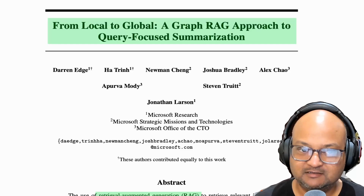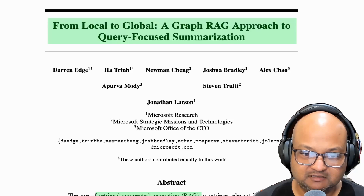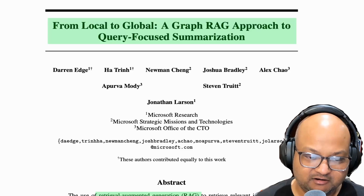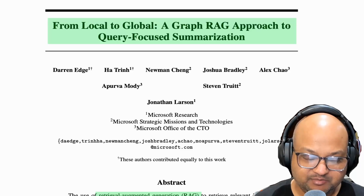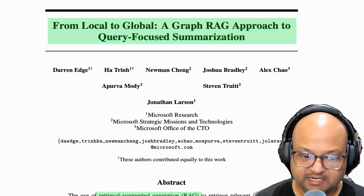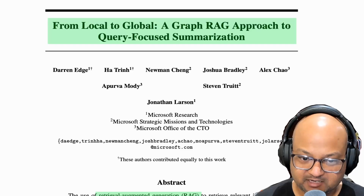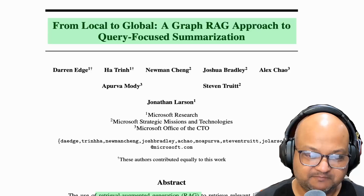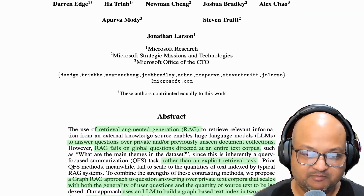Hi folks, welcome back. I hope you're all doing well. By now the general idea of retrieval augmented generation or RAG is pretty well understood in LLM circles. In fact, it's one of the most common ways in which LLMs are used. The major idea of RAG is to enable a general purpose LLM or foundation model to know something about your specific domain in the form of your own private corpus, and then use that to be able to answer questions about that domain.